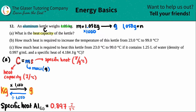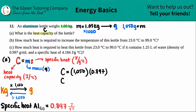That's the new mass m, 1,050 grams. My s is the specific heat, which they didn't give in the question — either your teacher expects you to know it, or they'll give it on a quiz. The specific heat for aluminum is 0.897. So C equals 1,050 times 0.897.